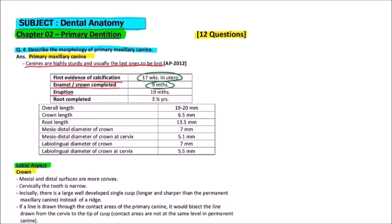The eruption of canine appears by 19 months of age, and the root is completed by 3 and 1/4 years of age.